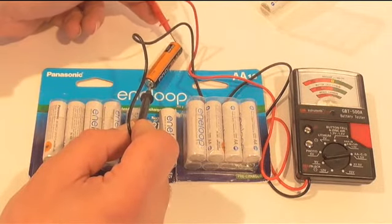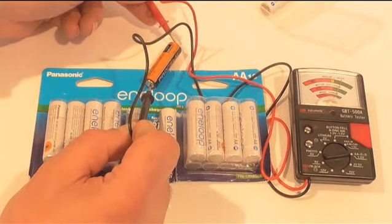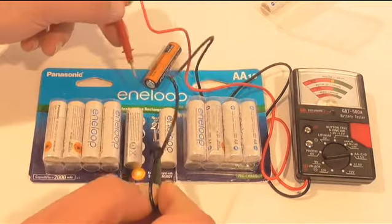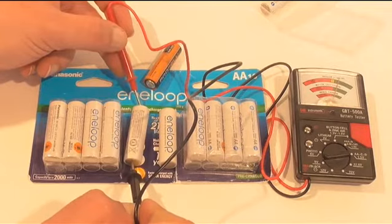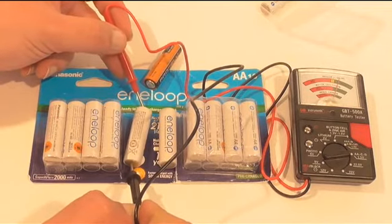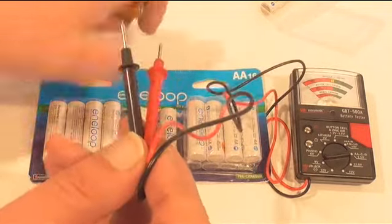You see that the Procells are maybe a little tiny bit hotter, but they give you about the same reading as a freshly charged Eneloop one that's a couple years old.